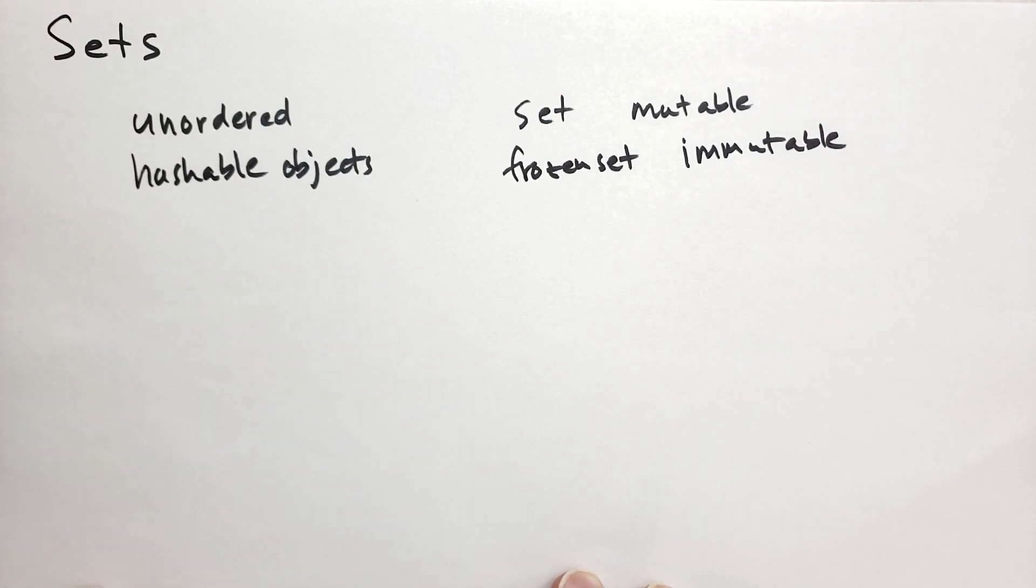The way Python stores sets is they basically use a dictionary structure except they don't store values, so they're just storing the keys. So you get the same O(1) behavior for adding, removing, and finding items in a set.